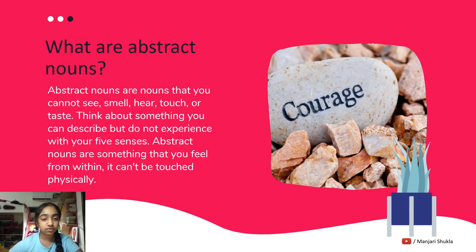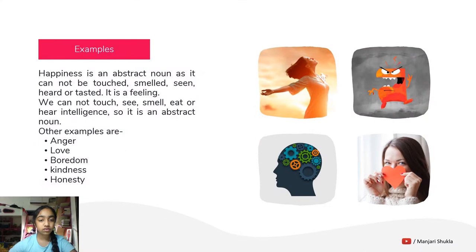What are abstract nouns? Abstract nouns are nouns that you cannot see, hear, smell, taste, or touch. Think about something that you can describe but do not experience with your five senses. Abstract nouns are something that you can feel from within — they cannot be touched physically. For example, happiness is an abstract noun as it cannot be touched, smelled, seen, heard, or tasted. It is a feeling.